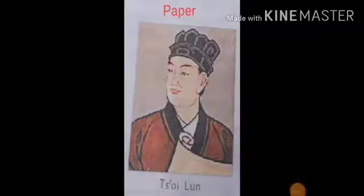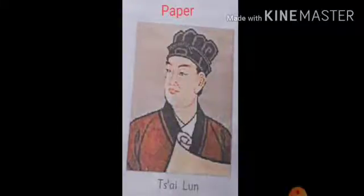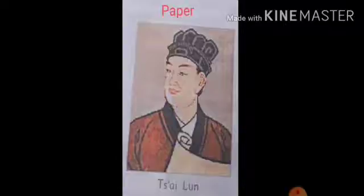Let's talk about some of the important inventions. First, we will talk about paper. For centuries, people tried to discover a better surface on which to record their thoughts. Before the invention of paper, people used to write on clay, papyrus, wood, slate, leaves, and parchment. The Romans wrote on wax tablets with a pointed pen, which was popular for temporary notes and messages.